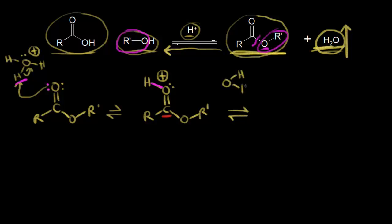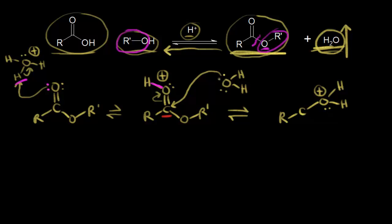Our nucleophile here is water — water is going to function as a nucleophile. The nucleophile attacks our electrophile and that pushes these electrons off onto this oxygen. When we show the bond now between the oxygen and that carbon, this would be a +1 formal charge on this oxygen. These electrons in blue are going to form the bond between this carbon and this oxygen. We still have an oxygen over here on the left, and now that oxygen has two lone pairs of electrons — these electrons in green move off and are now a lone pair on that oxygen.